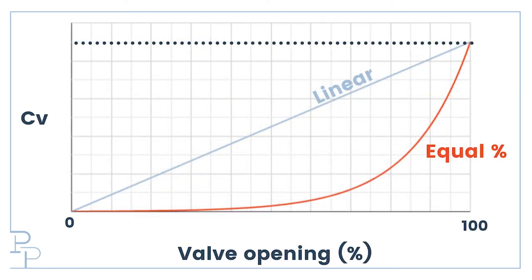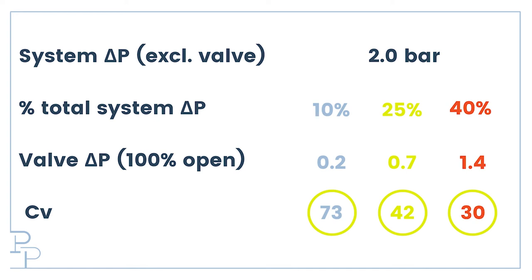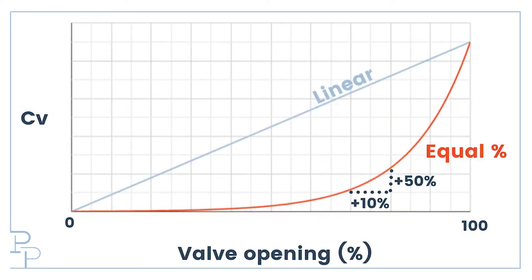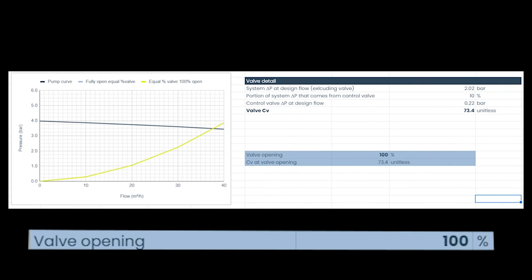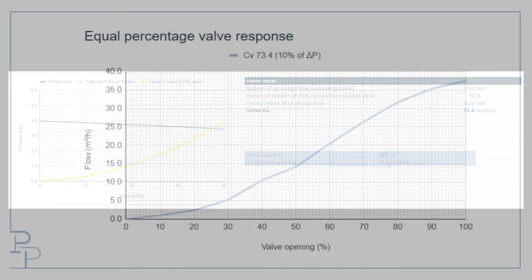We do this exercise again, but this time we use an equal percentage valve characteristic. The valve CVs when they are fully open are identical to the linear valves we've just used, but the behavior is different as they open. I have set it up so that I get 50% more CV for every additional 10% opening for these equal percentage valves. Once again we start with the largest of the three valves, which gives the smallest total system pressure drop of 10%. I've gone through the exercise of tracking the intersection point of the curves as the valve opens from 0 to 100% and the curve I obtain looks as follows.